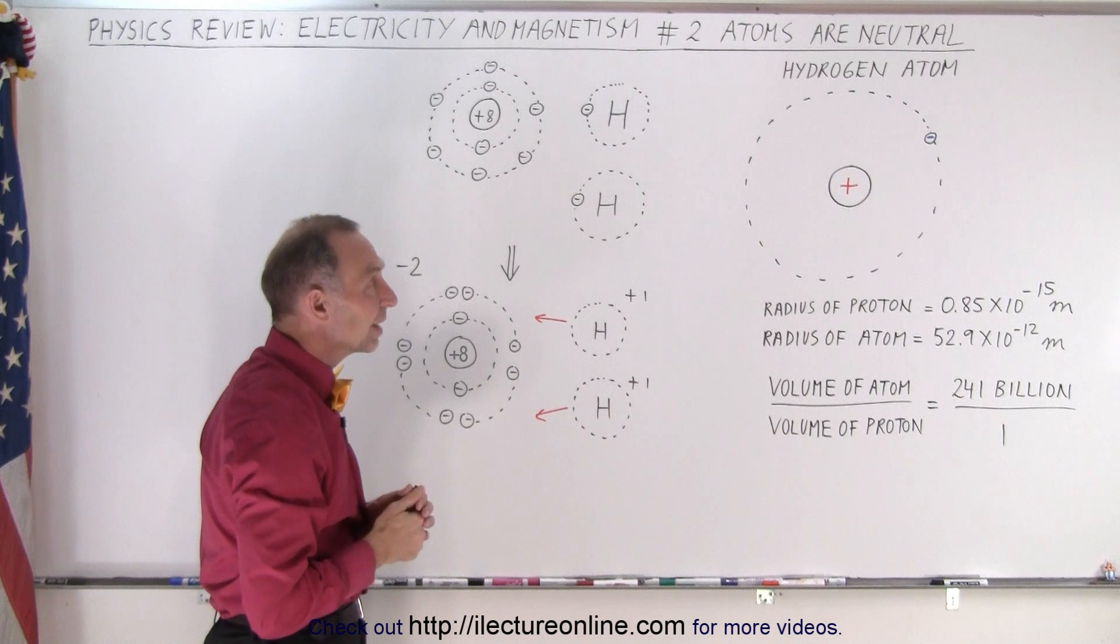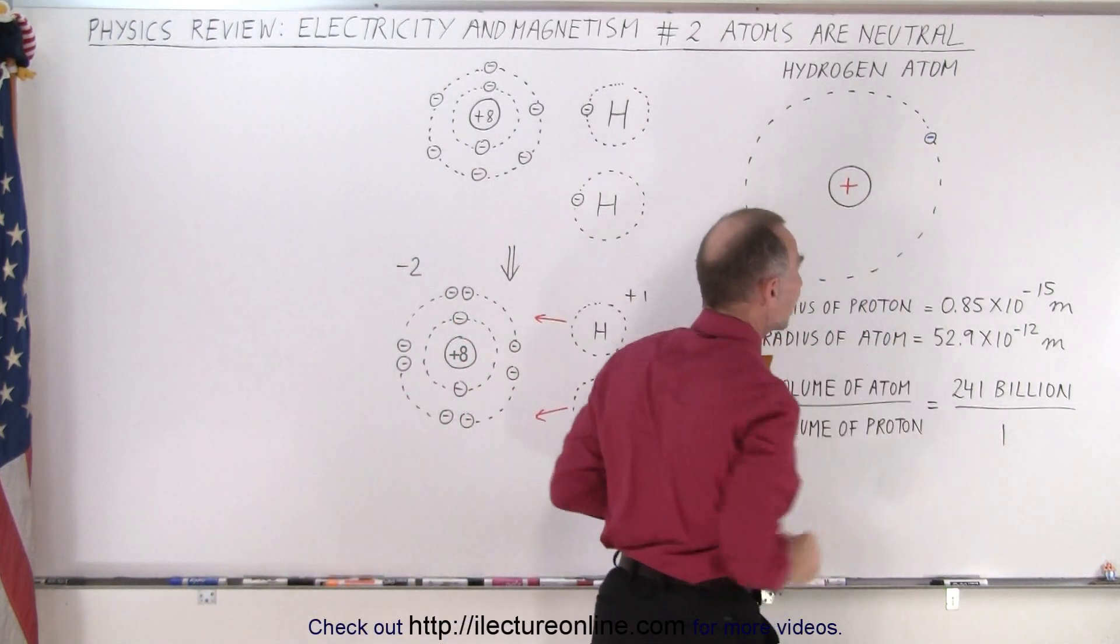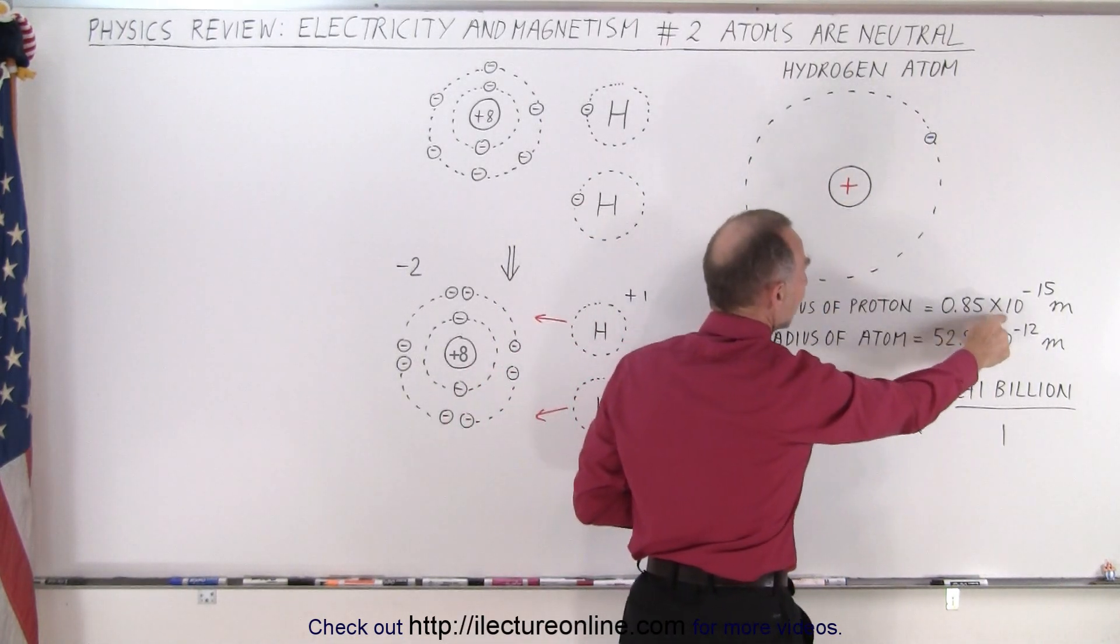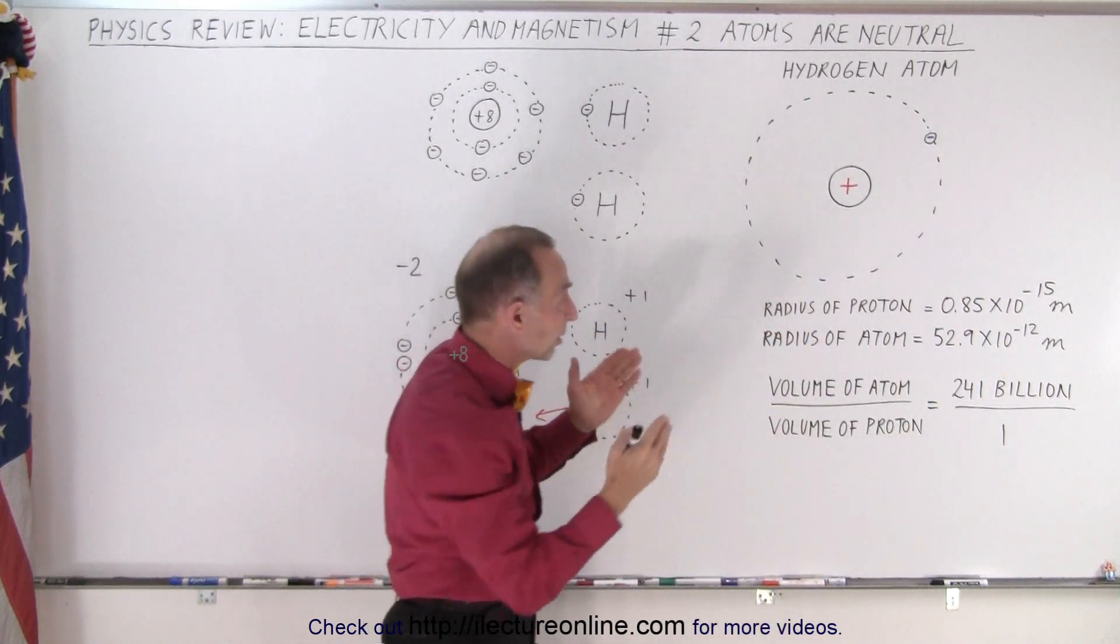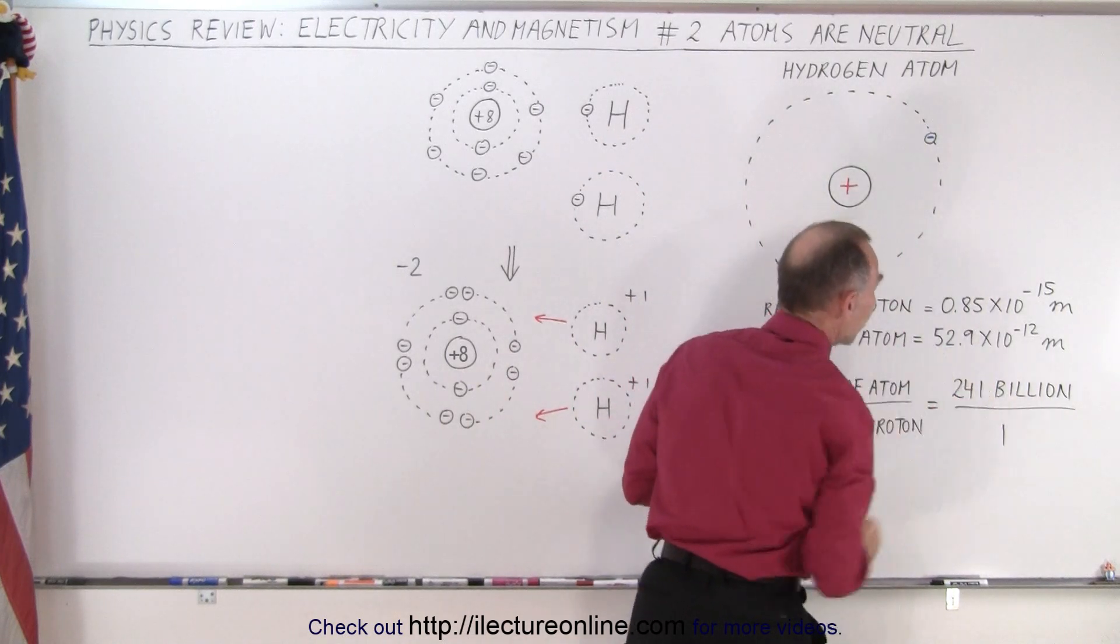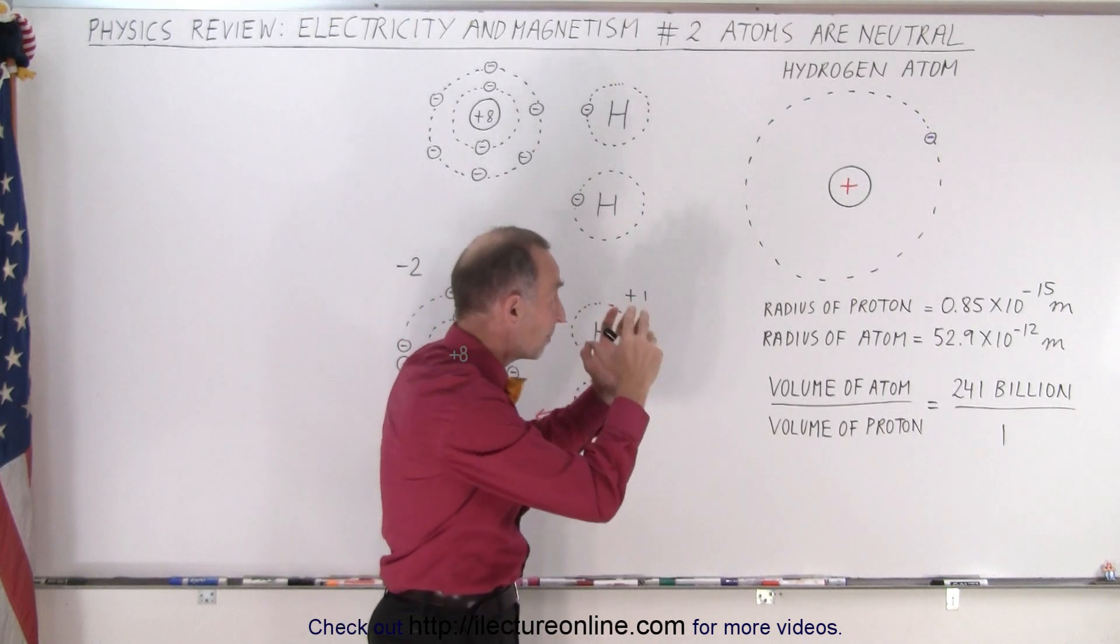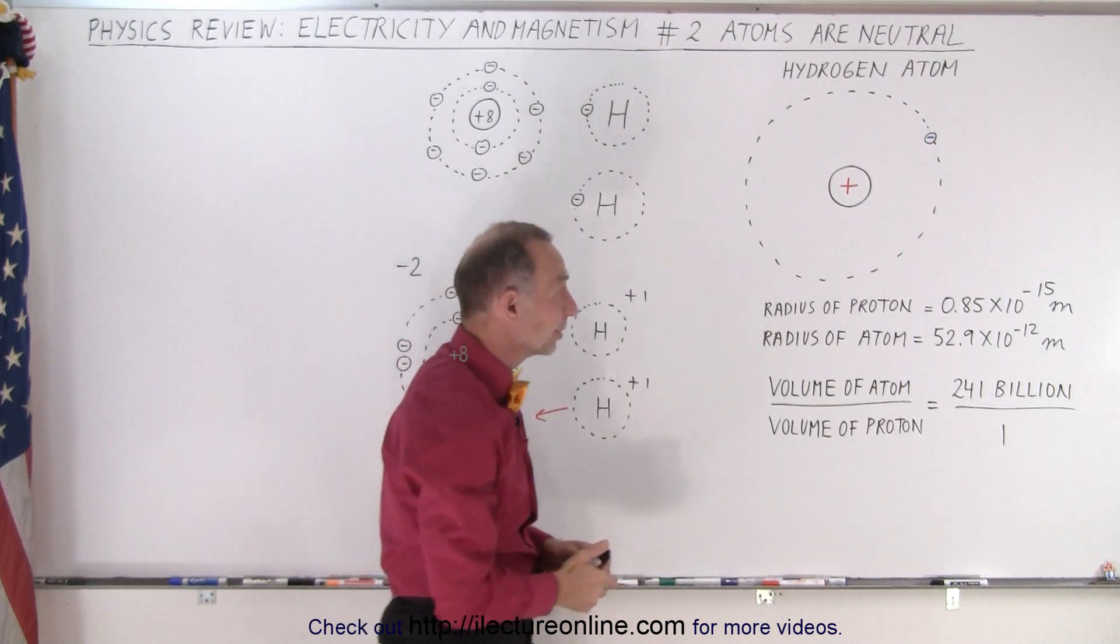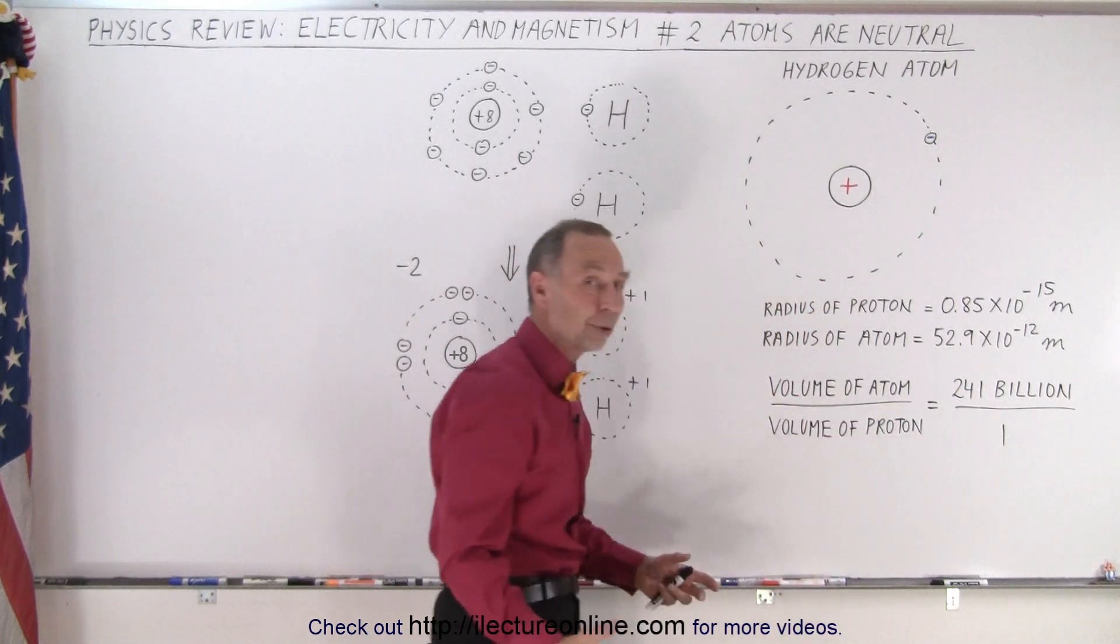Now it's quite amazing that the proton is actually a very tiny particle relative to the size of the atom. The radius of the proton is 0.85 times 10 to the minus 15 meters, and the radius of the atom, the distance from the proton to the electron, is 52.9 times 10 to the minus 12 meters. If you then compare the volume of a nucleus, the volume of the proton at the center, and the volume of the atom itself, well the volume of the atom is 241 billion to 1 relative to the volume of the proton.